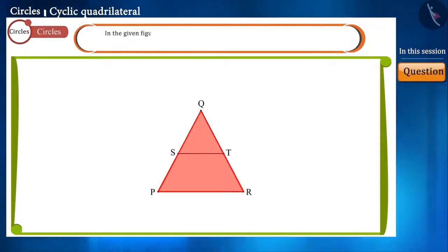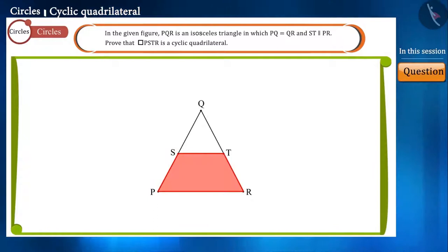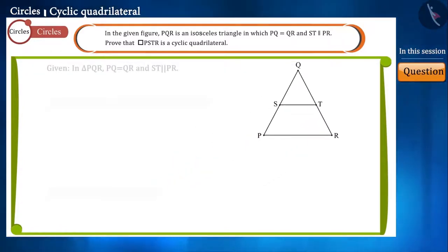PQR, the sides PQ and QR are equal, and the line segment ST is parallel to PR. We have to prove that quadrilateral PSTR is a cyclic quadrilateral. We know that the sum of each pair of opposite angles of a cyclic quadrilateral is 180 degrees.